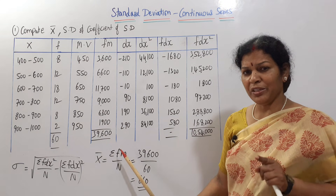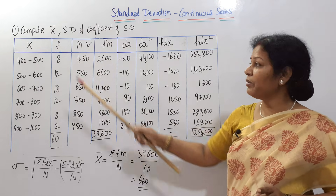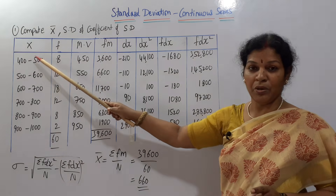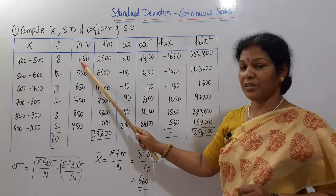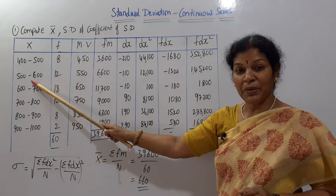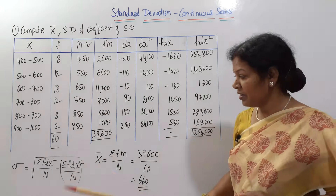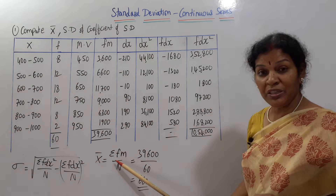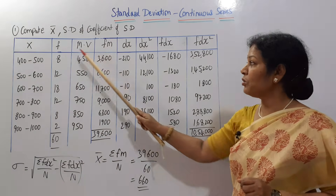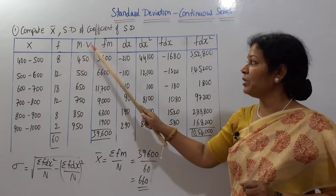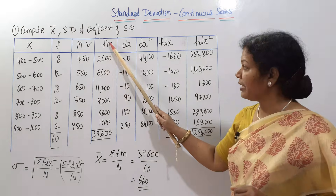For fm, we need first the mid value — the middle value of the class interval. 400 plus 500 divided by 2 gives 450. 500 plus 600 by 2 gives 550. Like this, mid values are obtained. Now, fm is frequency into mid value. So 18 into 450 gives 8100, and so on.